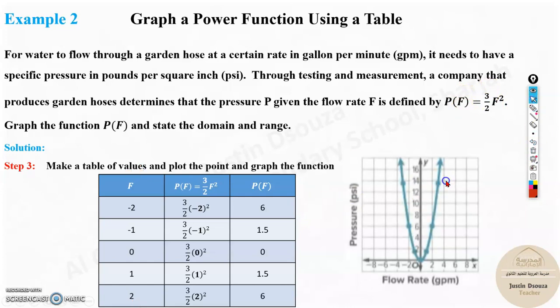We need to graph this. When you graph it, you're going to get something like this. Now, based on the flow rate, you can see what is the pressure. Say when the flow rate is 2, you can see the pressure is 6.